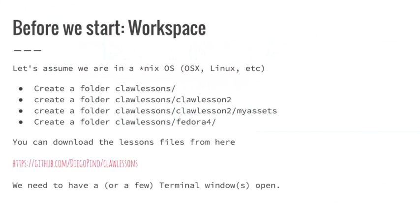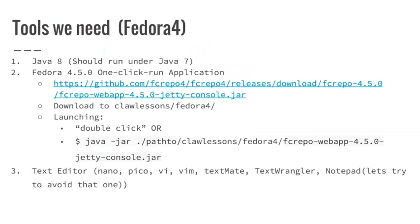I'm assuming you are having some type of Nix operating system like OS X, Linux or whatever. If you are on Windows, it will also be possible to do this - we have the HTML interface for Fedora 4 - but ideally we will work on a Nix operating system. We also need Fedora 4. There are many ways to install and deploy Fedora 4, but for this lesson the easiest one is the one-click run application that you can download on the Fedora 4 GitHub repository. The one we're going to use is the 4.5 one.